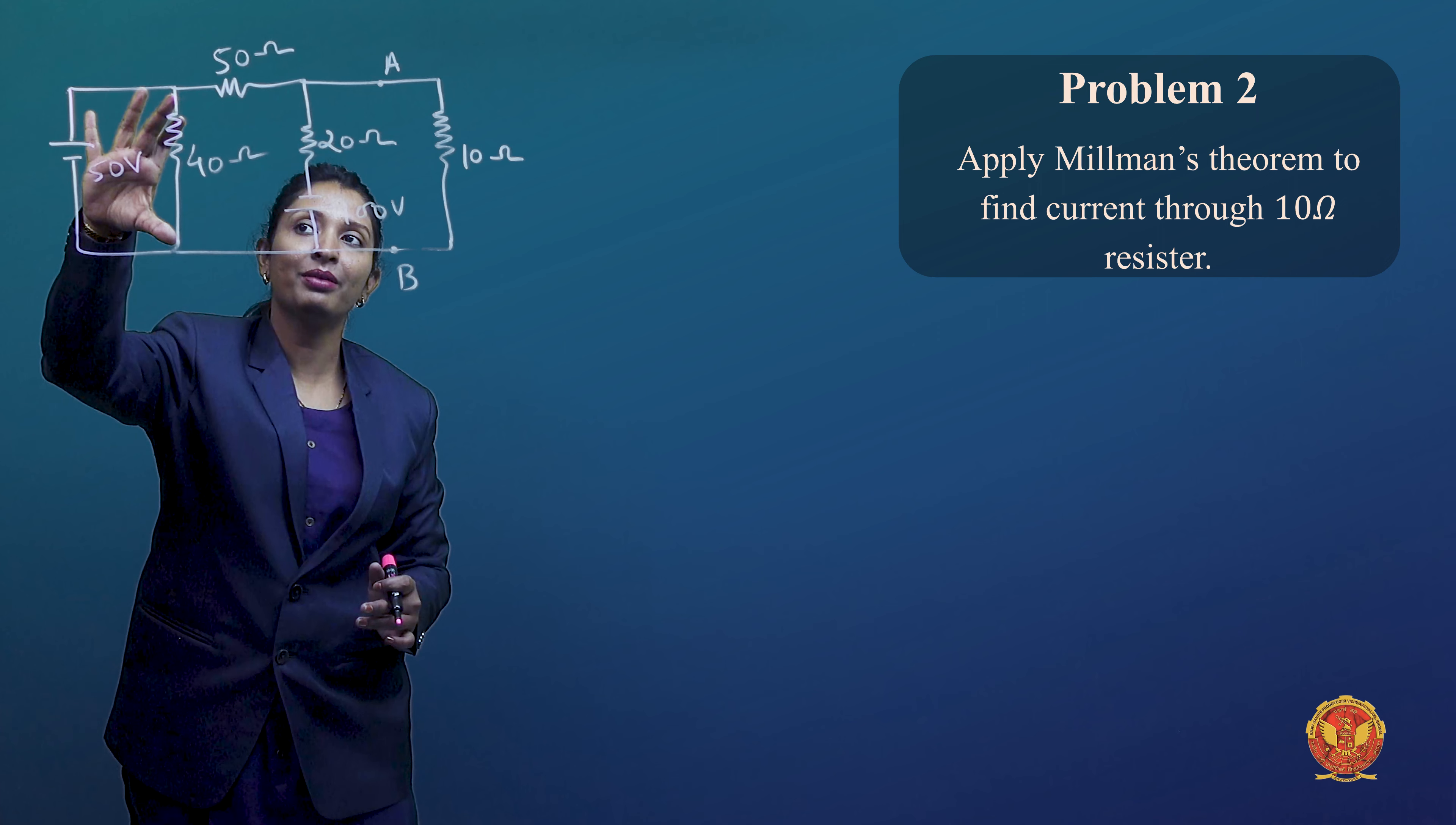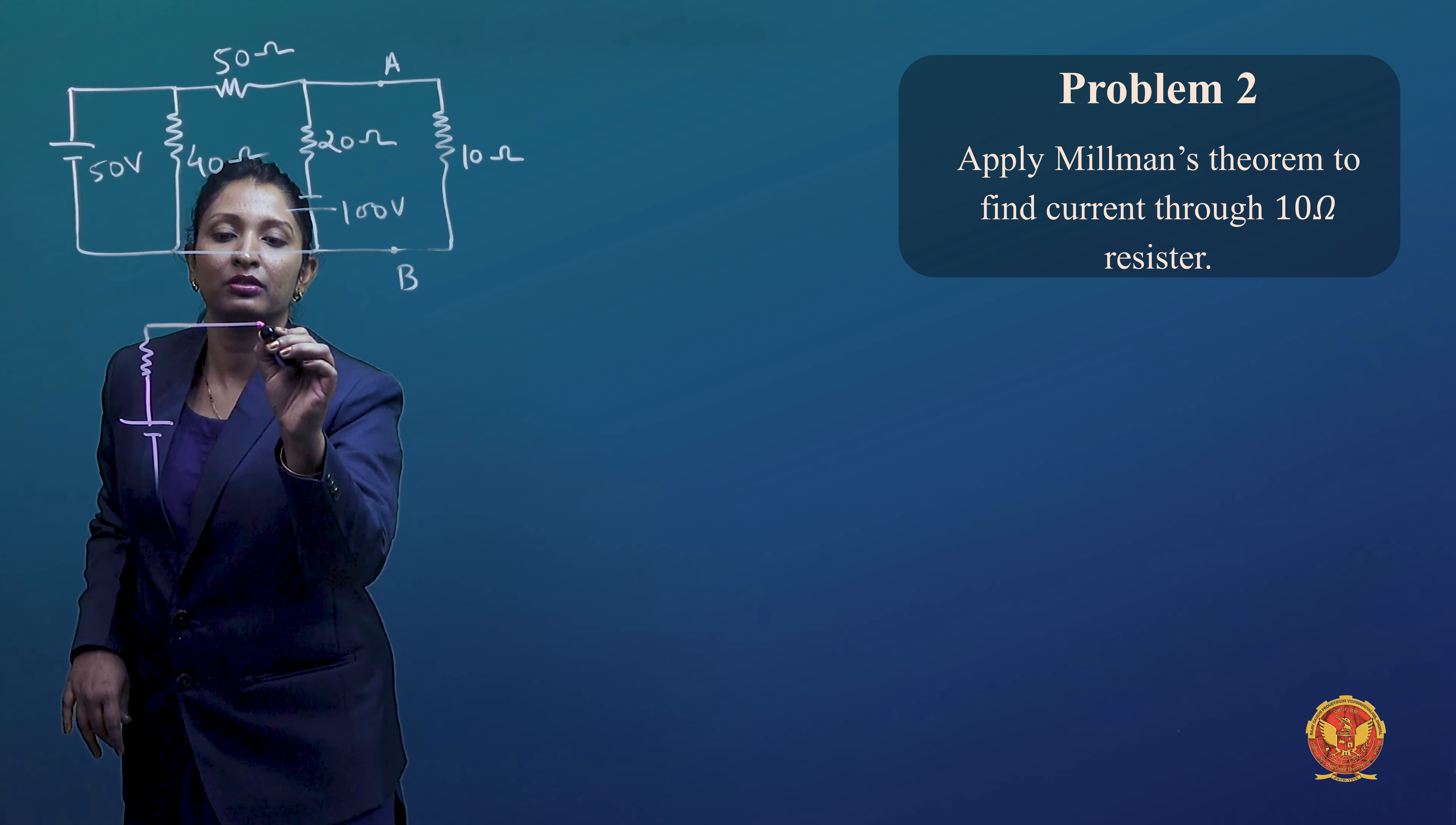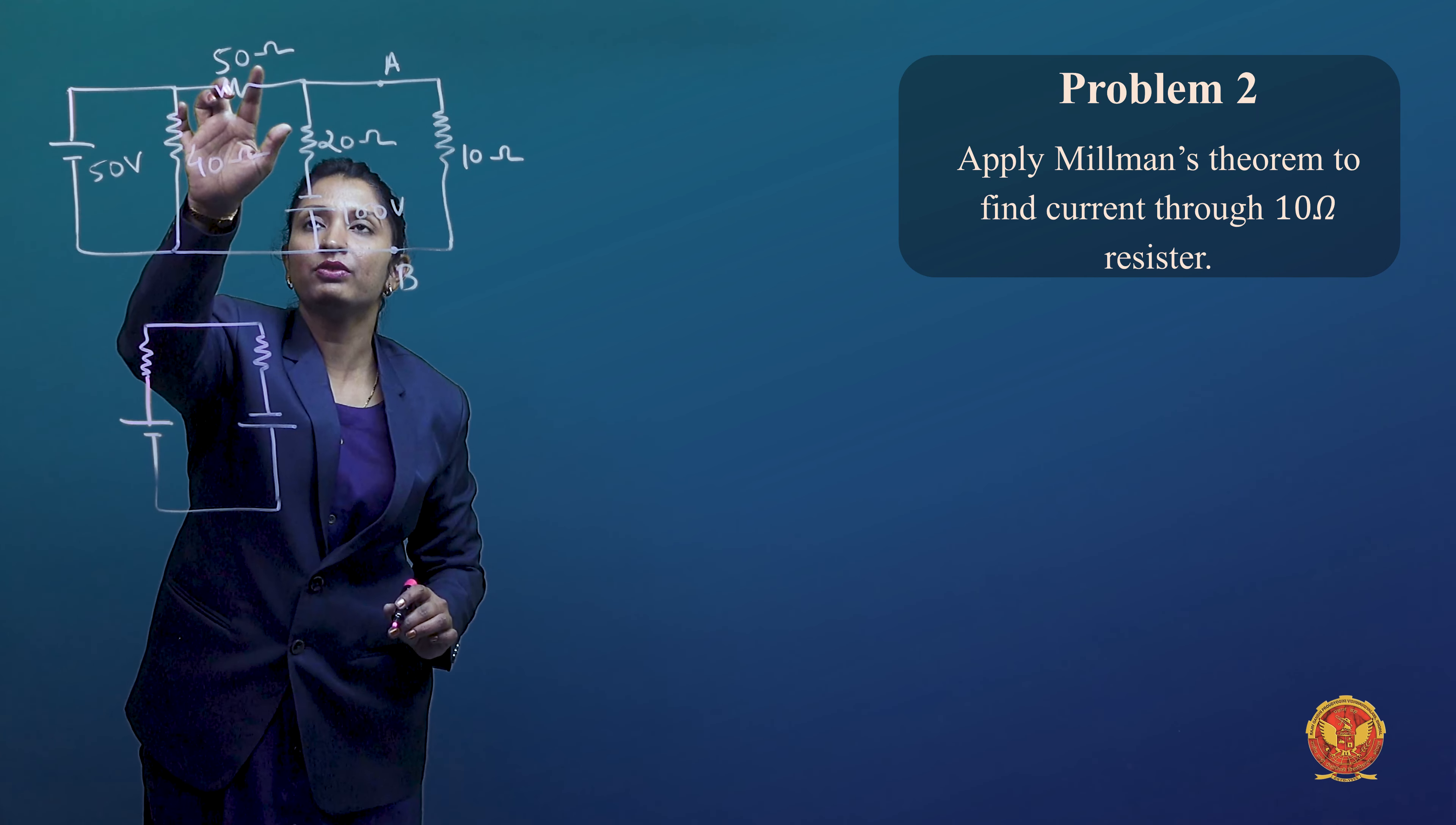So we can remove it temporarily. What is our new circuit? When we removed it, it is 50V in series with 50 Ohm resistance.